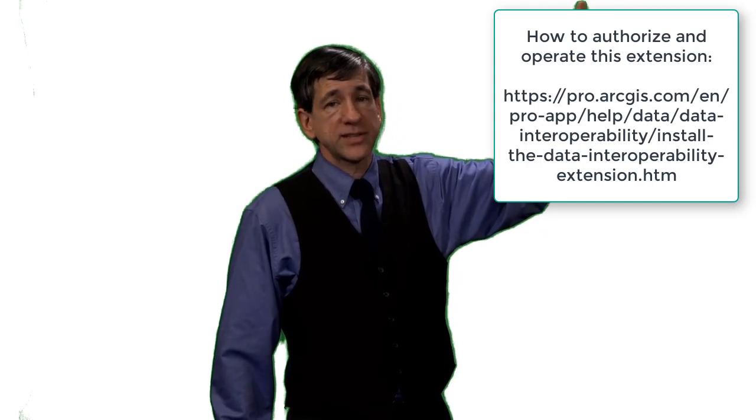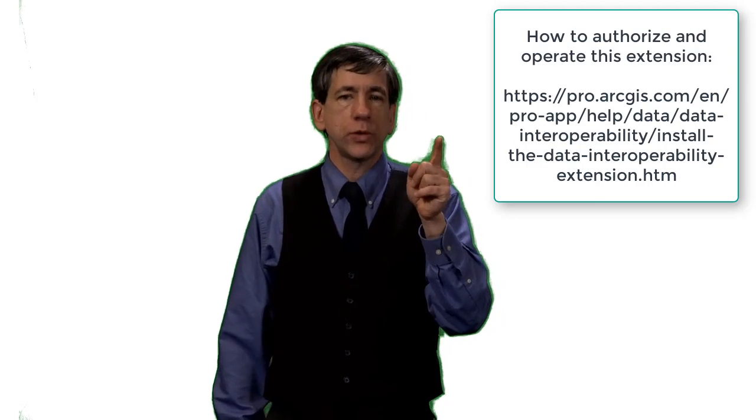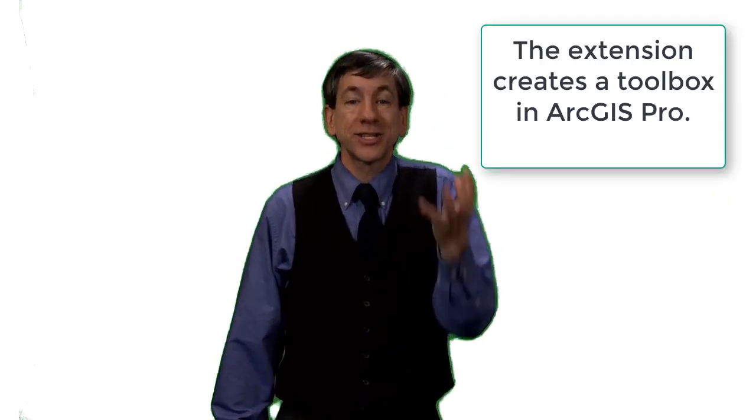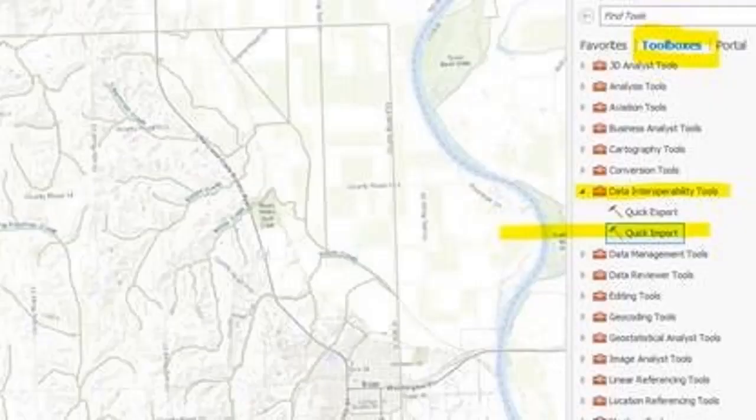I recently tested the Data Interoperability Extension in ArcGIS Pro and was thrilled with the results. Read about how to install and authorize the extension via this link here. The extension does many things, but one that is particularly useful is that it creates a toolbox directly in ArcGIS Pro, shown here. I used this toolbox's Quick Import tool to import an SDTS format USGS digital line graph file directly into a file geodatabase.